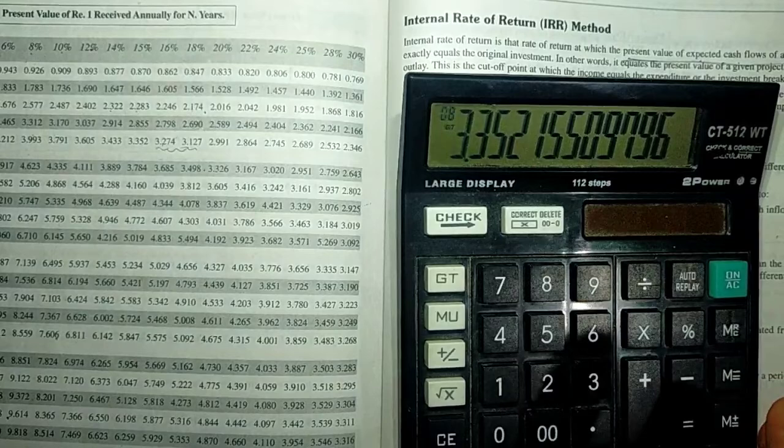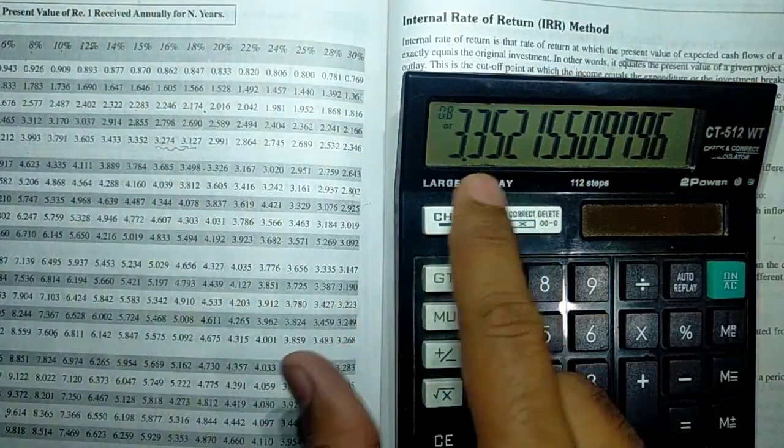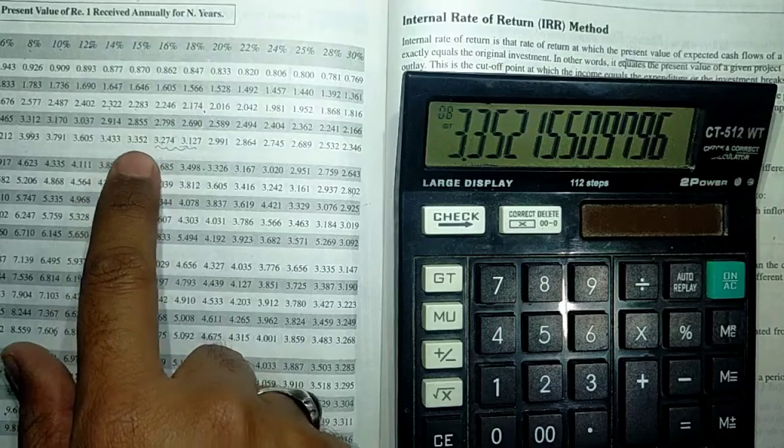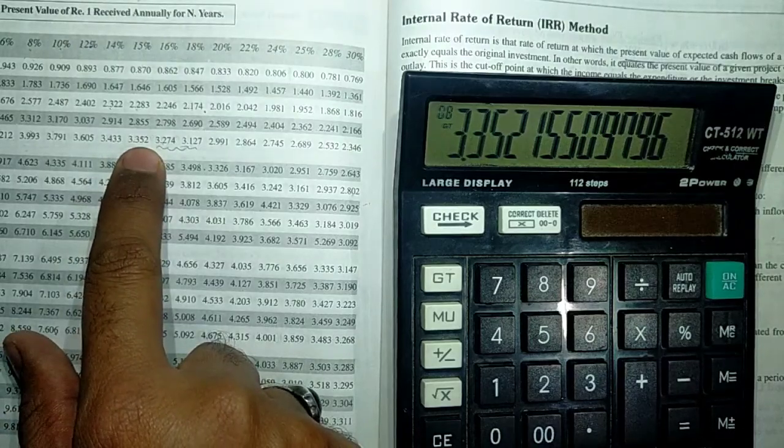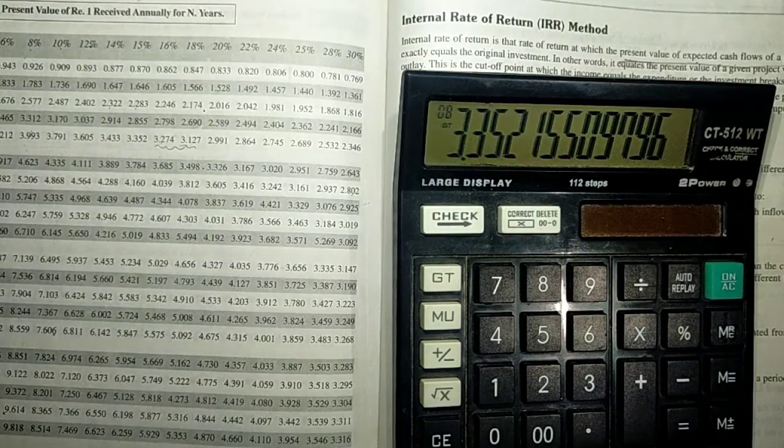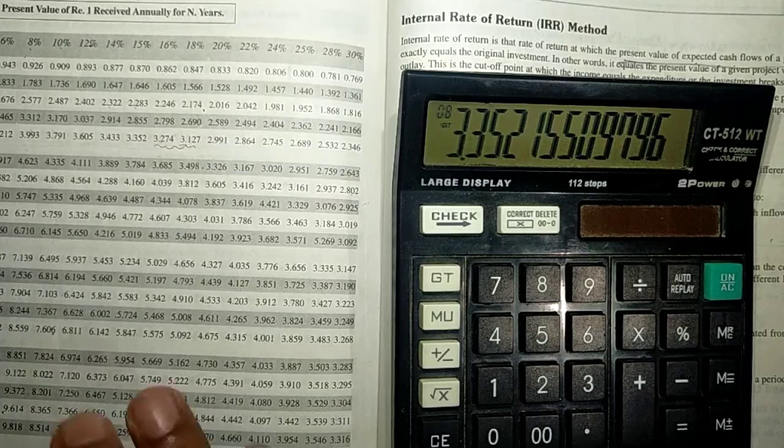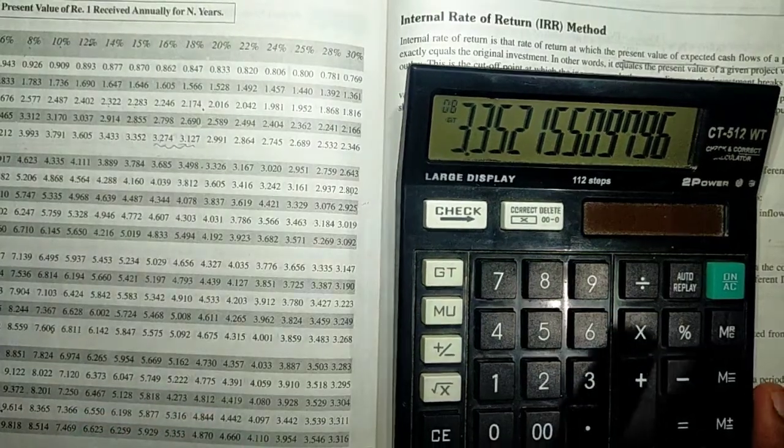You'll be getting the answer directly. This is 3.352, you can find it in the table as well. In this way you can easily find out PVIF and PVIFA without using a table, with a simple calculator.